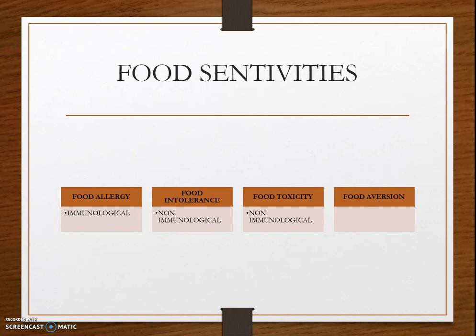Certain chemicals in foods and drinks can also cause food intolerance, including amines in some cheeses and caffeine in coffee, tea, and chocolates. Some people are more susceptible to these chemicals than others.